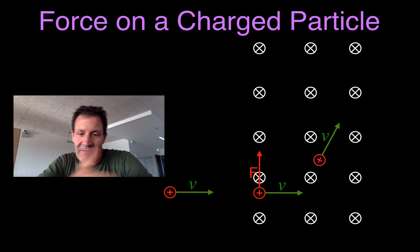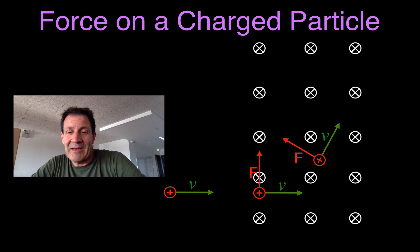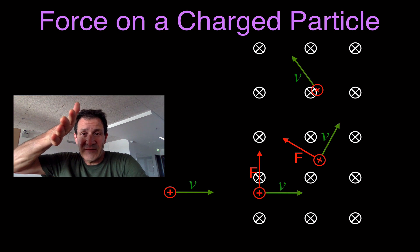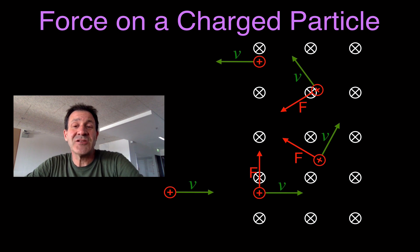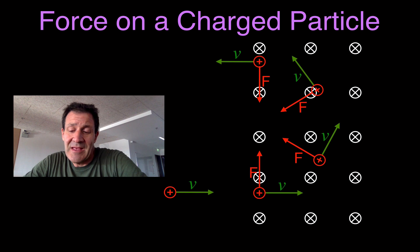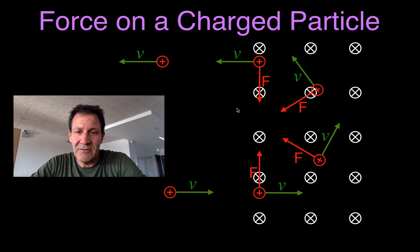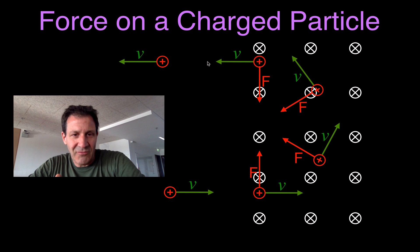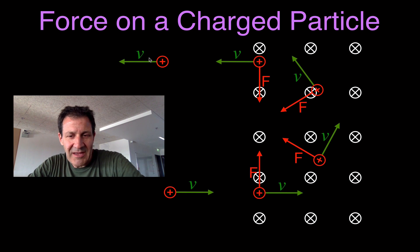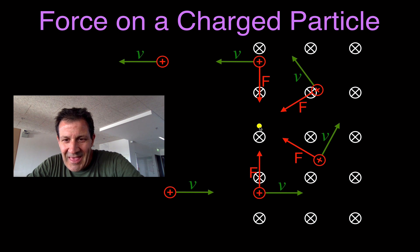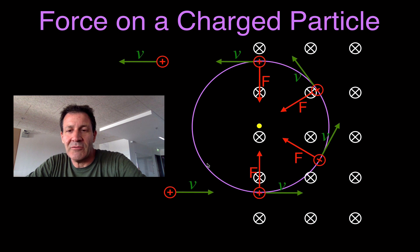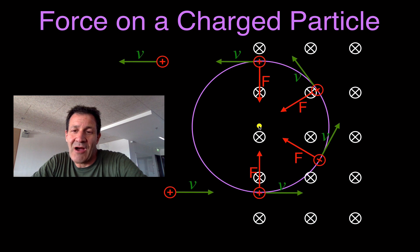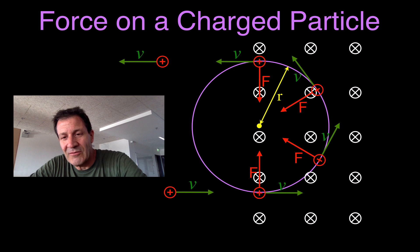The force is now directed up and to the left. As the particle continues, it comes around further, traveling up and to the left, and the force is now down and to the left. Finally, it reaches the edge of the magnetic field, still feeling a downward force, and then it leaves the field and flies straight away — no more force, no more acceleration. You'll notice that all of the force arrows point toward a single central point, which is the center of curvature. The distance from that center out to the curved path is the radius of that circular arc.